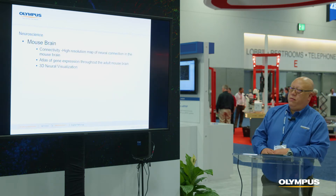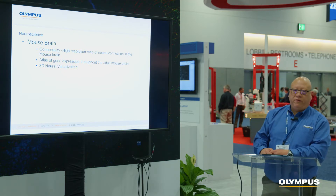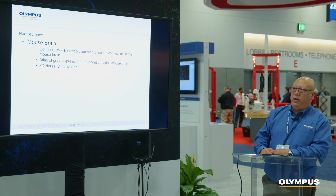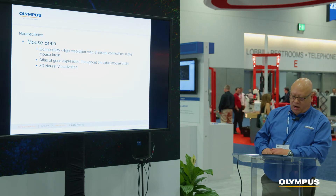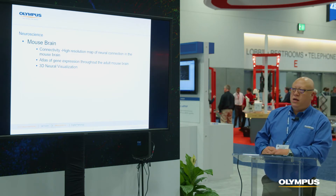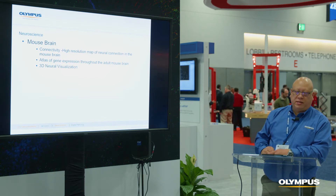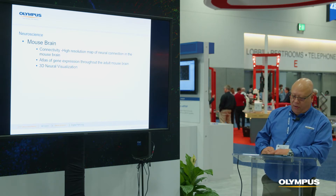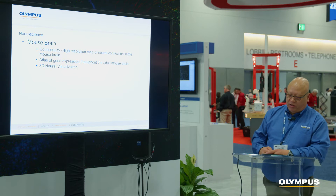Today, in mouse brains, connectivity was one of the first projects — we would rapidly capture as many brain sections as possible to connect a neural network for the mouse brain. We also see groups creating an atlas for gene expression throughout the adult mouse brain and even some younger mouse brains. Later on, we'll look at the idea of 3D neural visualization.